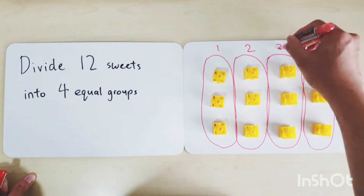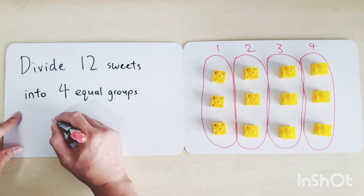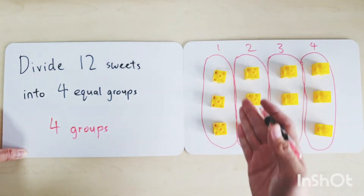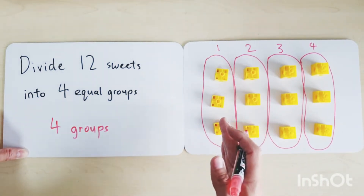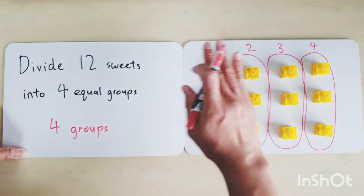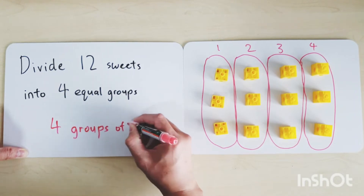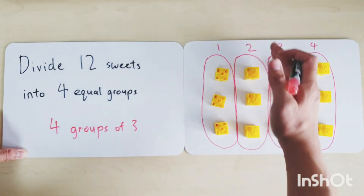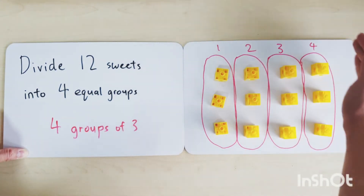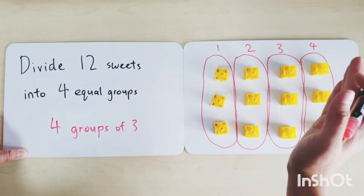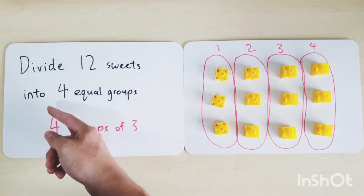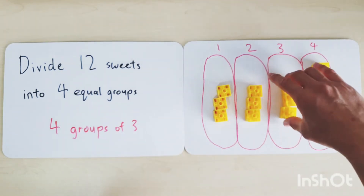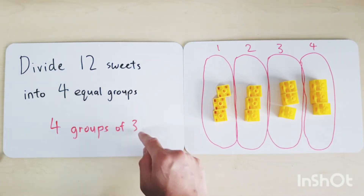There are four groups. Inside these four groups there are three sweets each. There are three sweets in each group. So there are four groups of three. Each group of three contains one, two, three sweets. There are four such groups, so if we divide 12 sweets into four equal groups, there are four groups of three. Each equal group has three sweets.